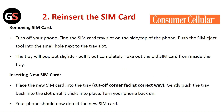Reinsert the SIM card. Turn off your phone. Find the SIM card tray slot on the side or the top of the phone. Push the SIM card ejection tool into the small hole next to the tray slot. The tray will pop out slightly — pull it out completely and take out the old SIM card from inside the tray.